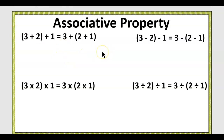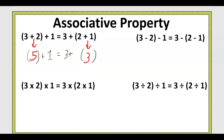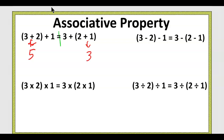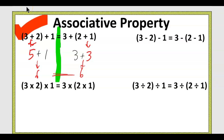We do what's inside the parentheses first, according to PEMDAS. Three plus two is five; two plus one is three. So we have five plus one on the left and three plus three on the right — both equal six. Yes, we can use the associative property with addition.